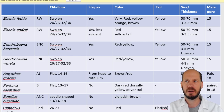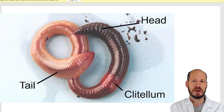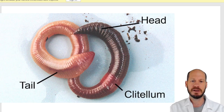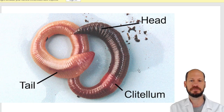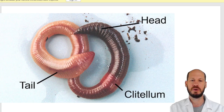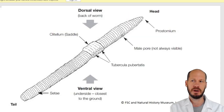Some worms are easy to identify, some are harder. Starting from the basics: you have the clitellum — the band that's often a different color, sometimes swollen, jumping out from the body. The shortest part of the worm after the clitellum is the head. This head can have different features. The point of the head is the prostomium.